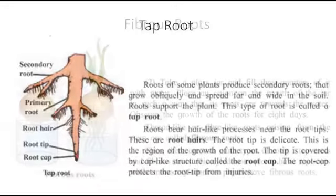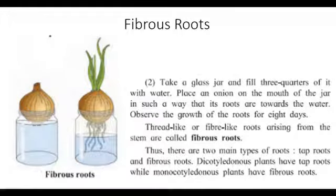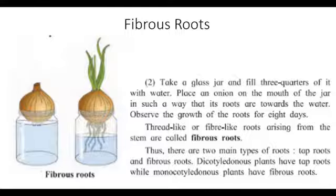Now take a glass jar and fill three-quarters of it with water. Place an onion on the mouth of the jar in such a way that its roots are towards the water. Observe the growth of the roots for eight days. The thread-like or fiber-like roots arising from the stem are called fibrous roots. Thus there are two main types of roots: tap roots and fibrous roots.